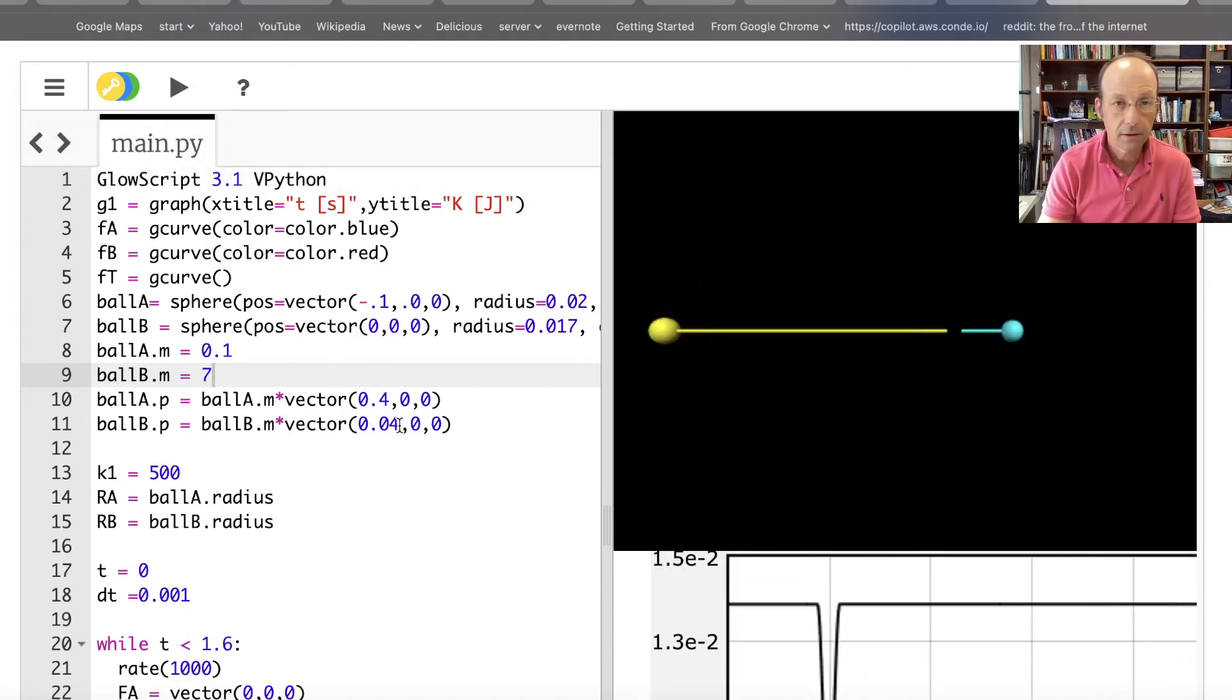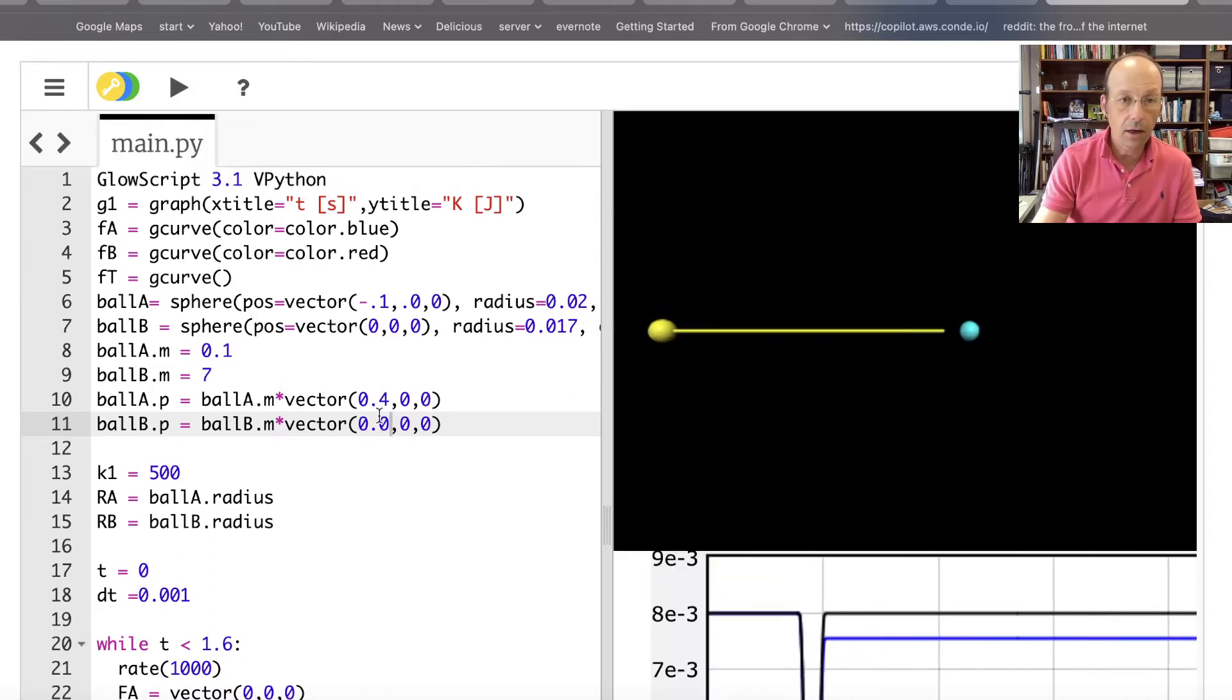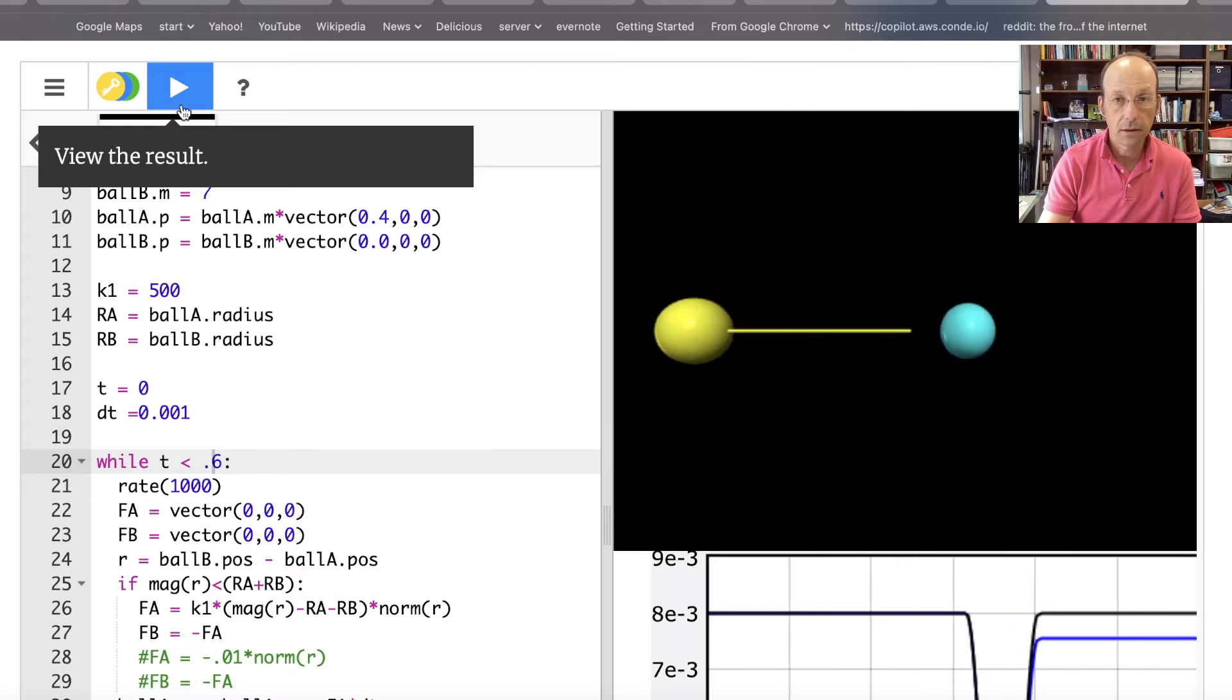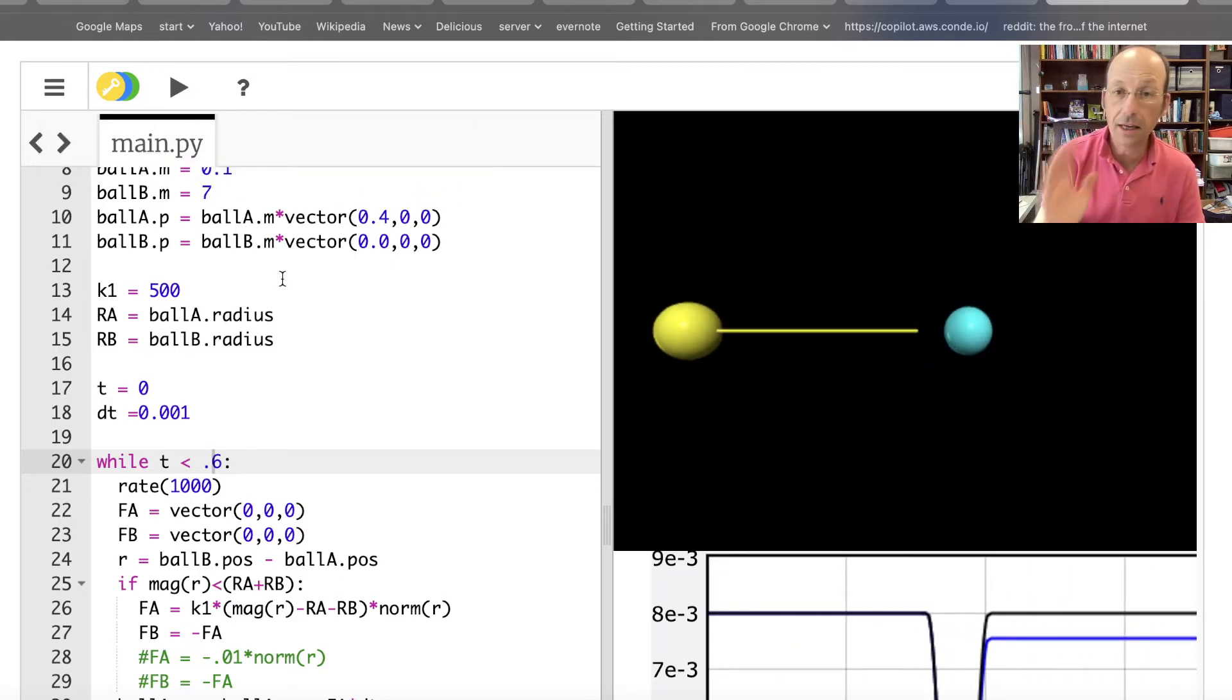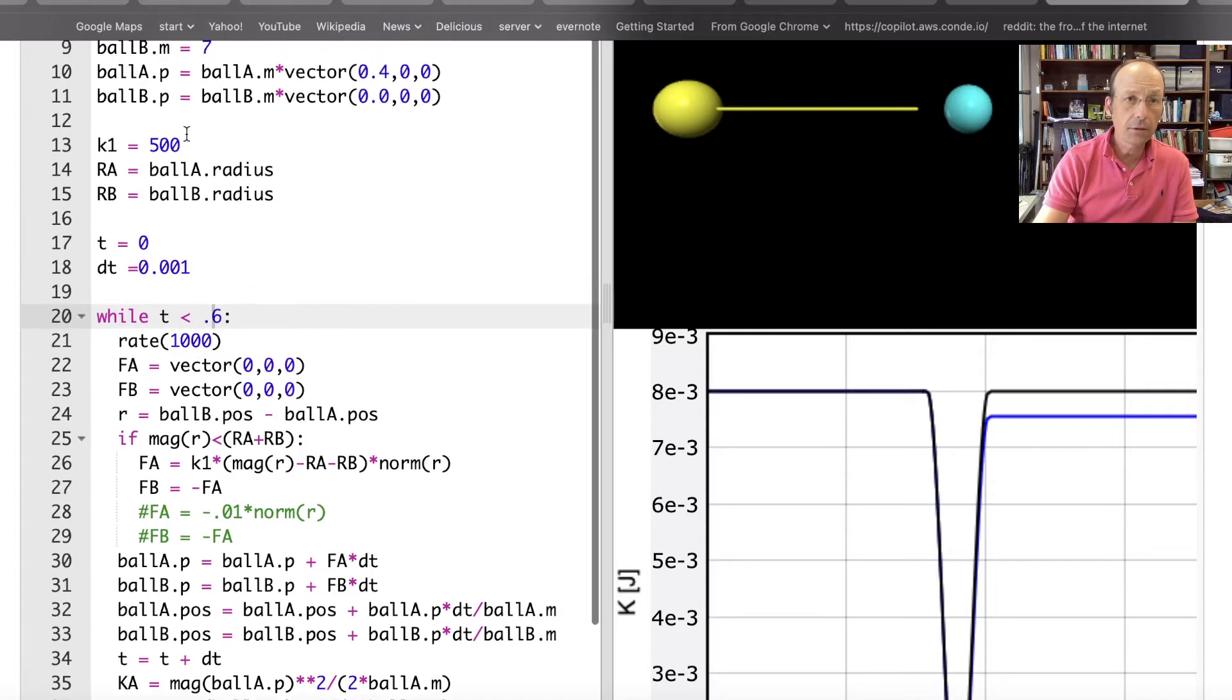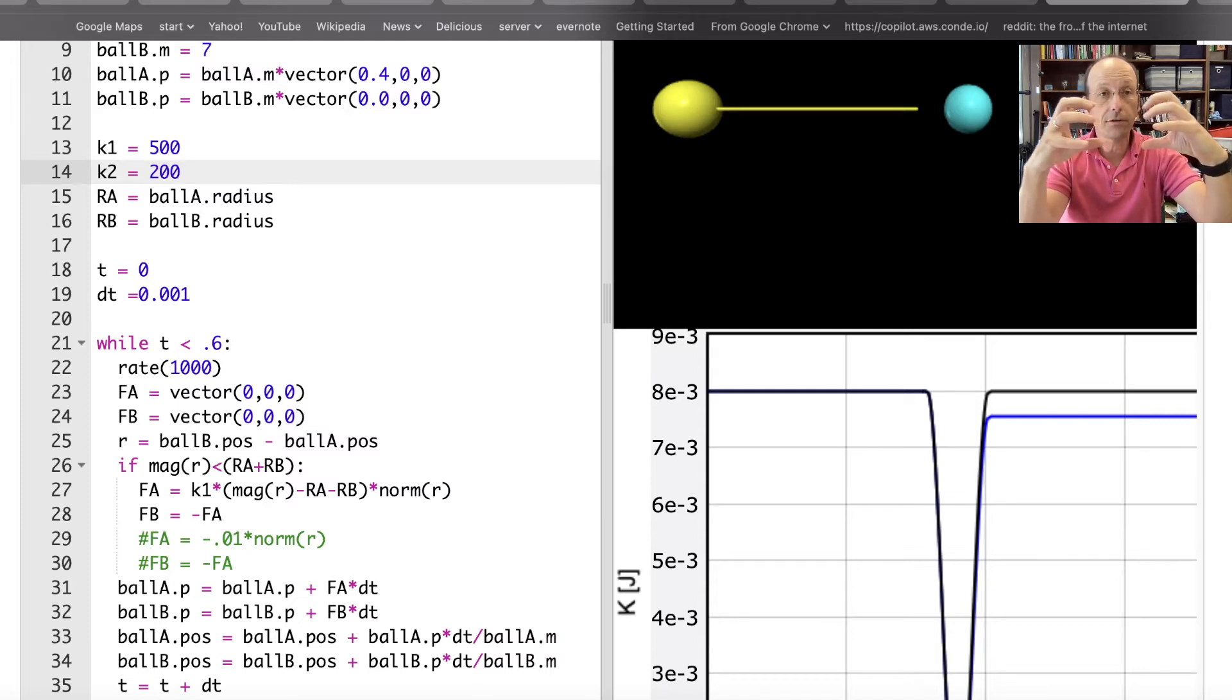I'm going to change this time to 0.6. It's an elastic collision. We can even see the total kinetic energy. Now let's pick a second spring constant, k2, at 200. So when they're compressing, the spring constant pushing them apart is going to be 500 newtons per meter. But once they're moving apart, it's going to be 200 newtons per meter.